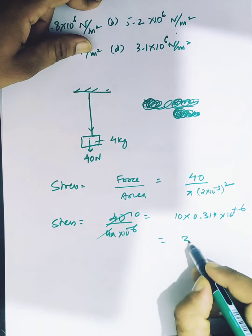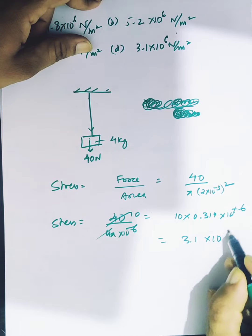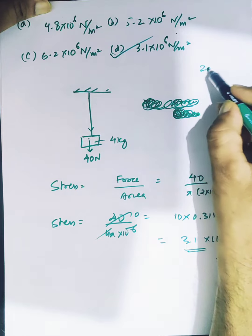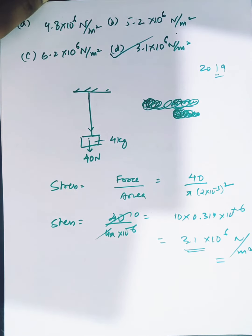So 3.1 × 10^6 newton per meter squared - that is the right answer. You can see this question was from 2019. After 2018, questions have become very easy.